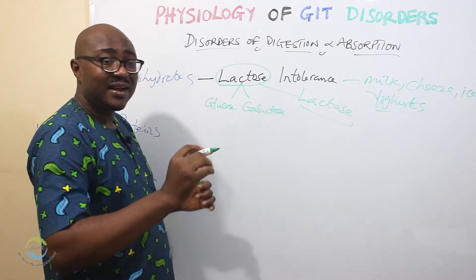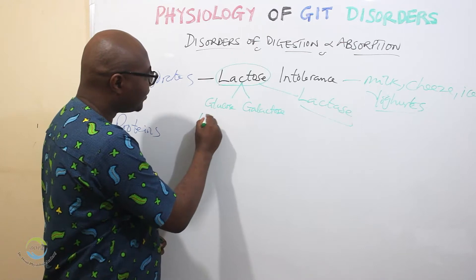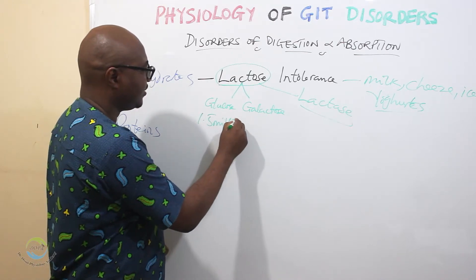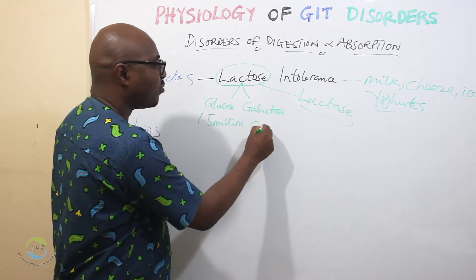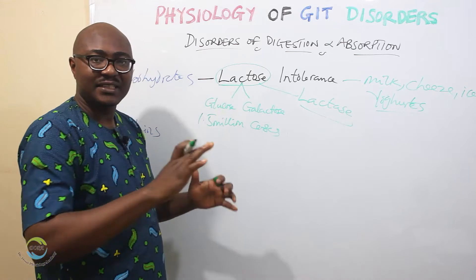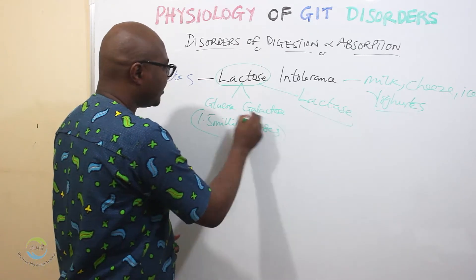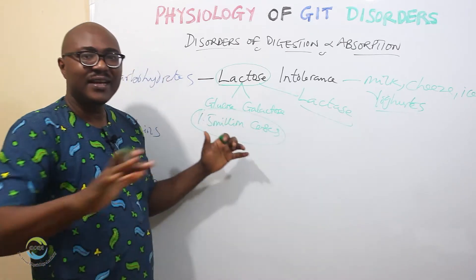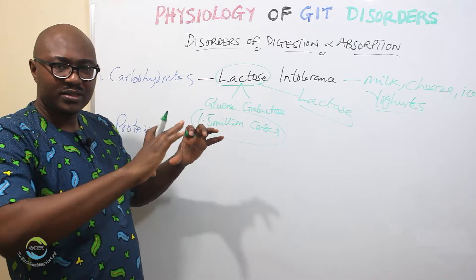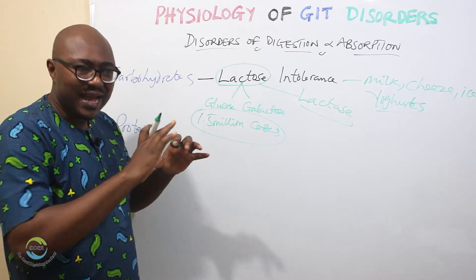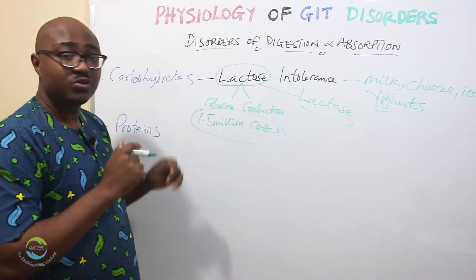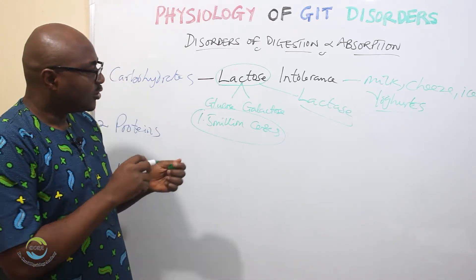In Nigeria, it is said that up to 1.5 million cases are reported per year, just to tell you how common it is. But generally, lactose intolerance is more common among Blacks, Africans, and Asians.